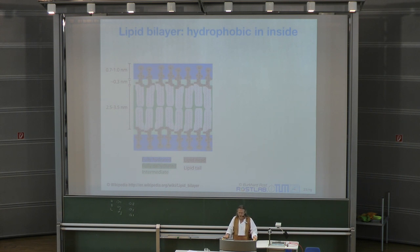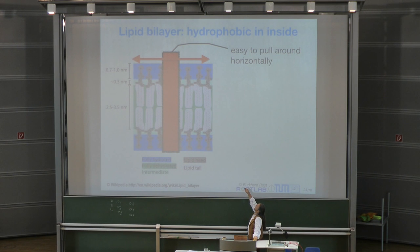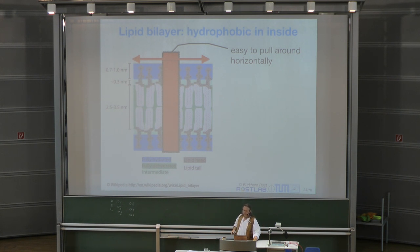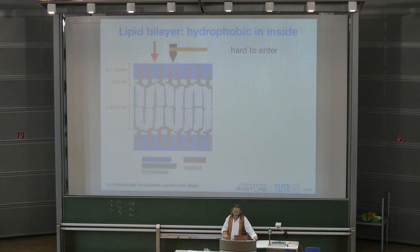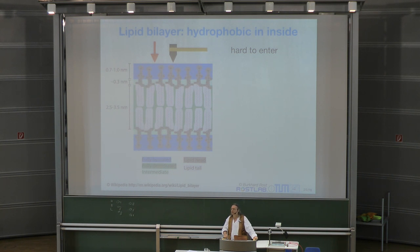This brings us back to the point about protection. You want to avoid that intrusion into the cell is easy. You want to avoid that things can easily get in. Now, how could you imagine that an attacker — a bacterium attacking another bacterium — could intrude into the cell?